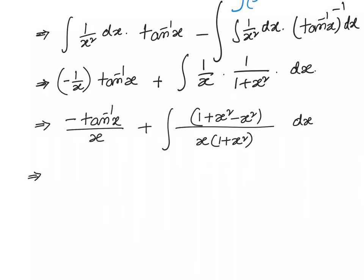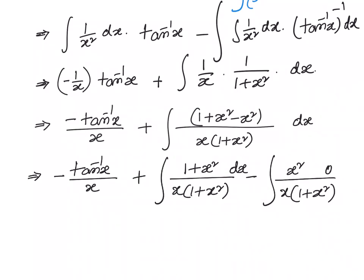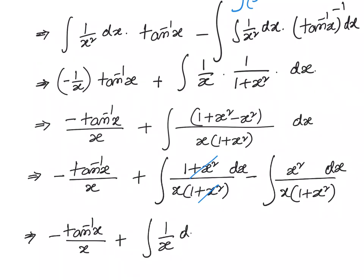In the next step we will have minus tan inverse x by x, plus we separate the numerator. The first part is the integral of 1 plus x square over x into 1 plus x square dx, and the second part is the integral of x square over x into 1 plus x square dx. After cancellation, 1 plus x square cancels in the first part, giving integral of 1 by x dx, which equals log x.